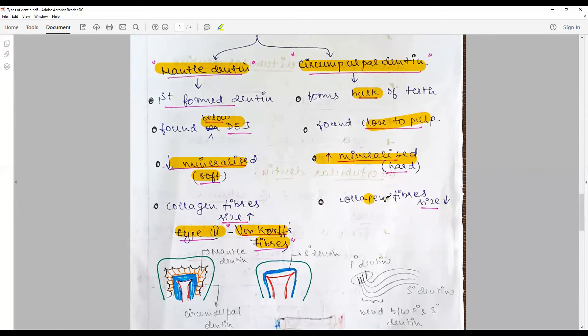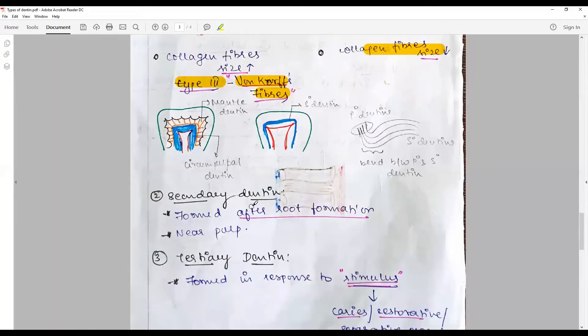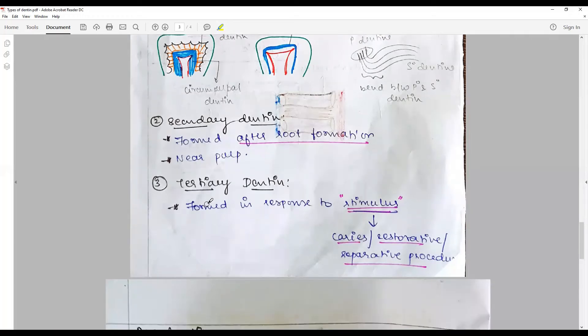Secondary dentin after root completion, very near to the pulp. Both are distinguished by a distinct line, sharp demarcation line. Tertiary dentin formed in response to a noxious stimulus such as dental caries, restorative or reparative procedure, or even trauma.